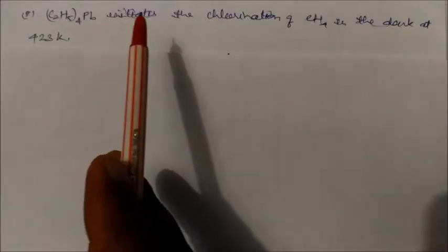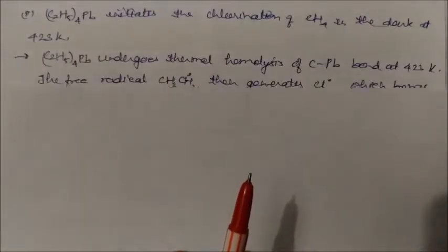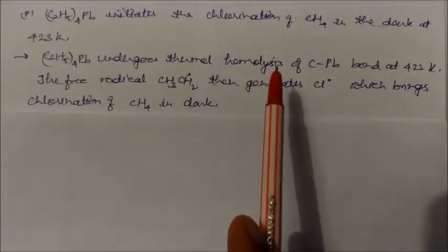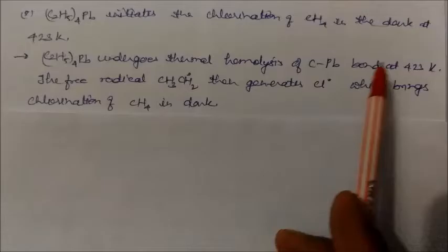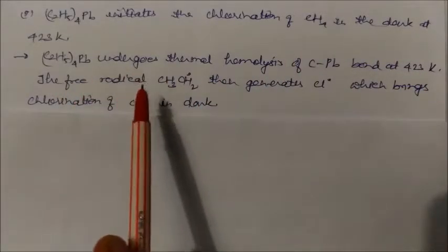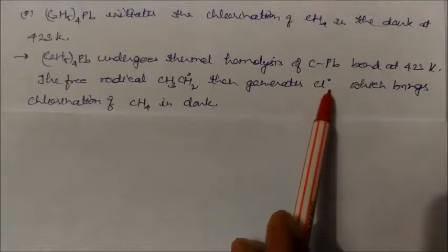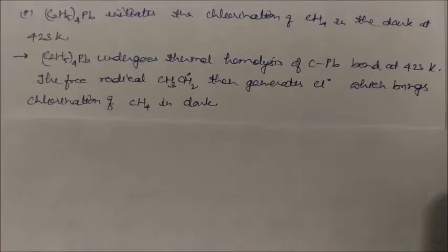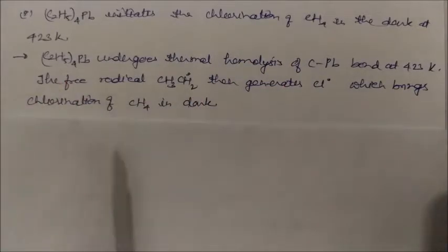Tetraethyl lead initiates the chlorination of methane in the dark at 423 K. This happens because tetraethyl lead undergoes thermohomolysis of the carbon-lead bond at this temperature, forming ethyl free radicals. These ethyl free radicals generate chlorine free radicals, which bring about chlorination of methane in dark conditions. This is one way to get free chlorine in the dark using tetraethyl lead.